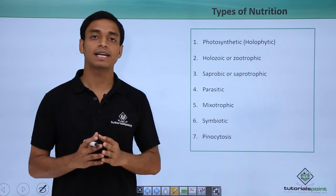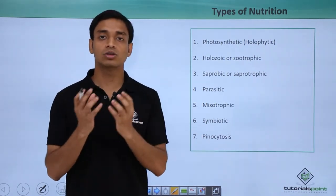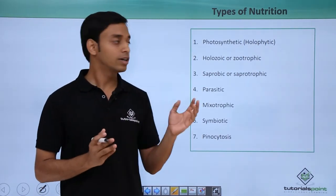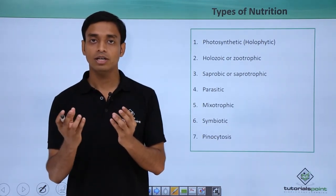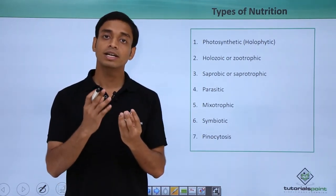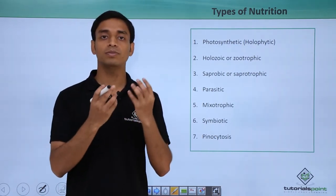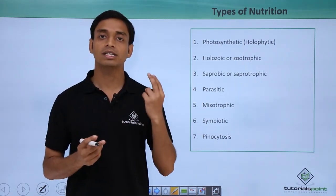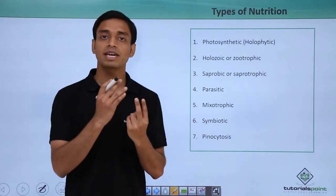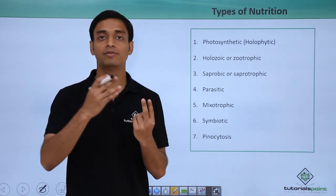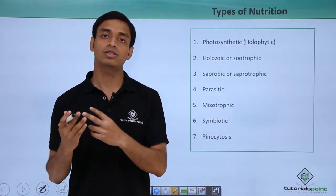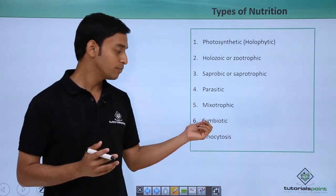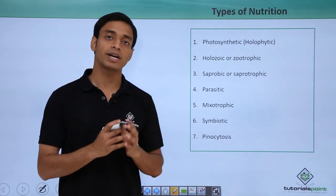The next type is known as symbiotic nutrition. This is a mutual association between two different types of organisms, where one organism is dependent on another for its survival or food, and the other organism is also benefited in return. For example, organism A performs activities helpful for B, while B performs activities helpful for A. It is a mutual coordination — this is the symbiotic association performed by these protists.